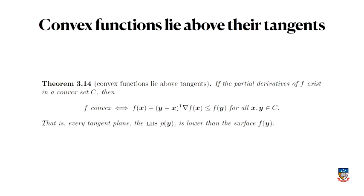And that statement basically says that f of y is larger than this expression here, which is the expression for the tangent plane, centered at x. So in every tangent plane, the left-hand side, this plane here on the left-hand side of this inequality is lower than the surface f of y. So that's the thing that we're going to prove.